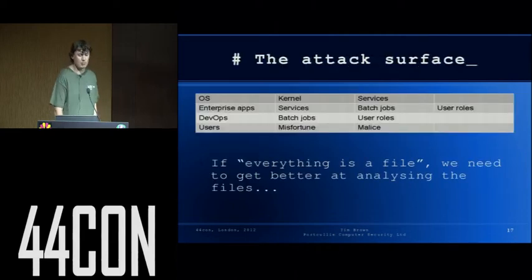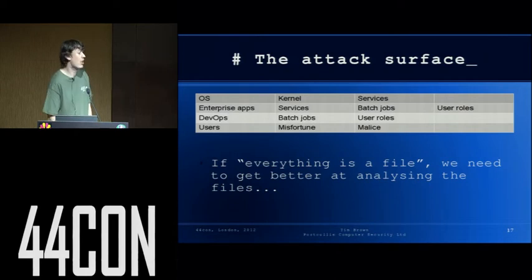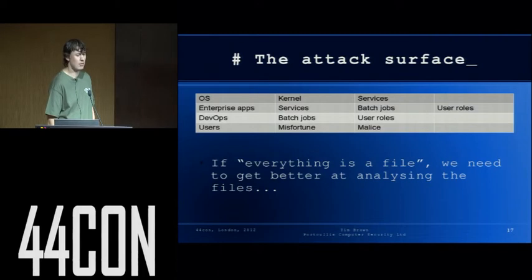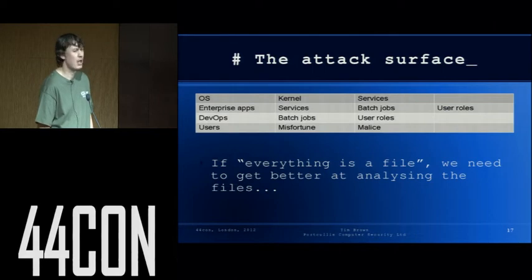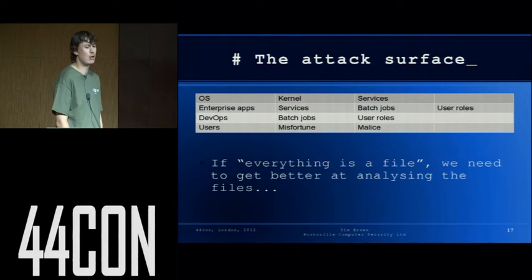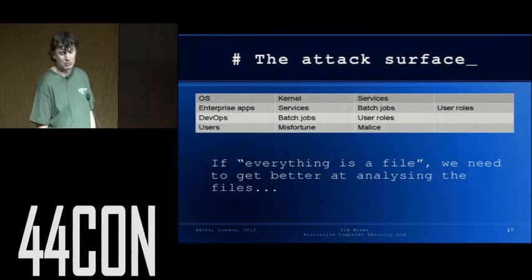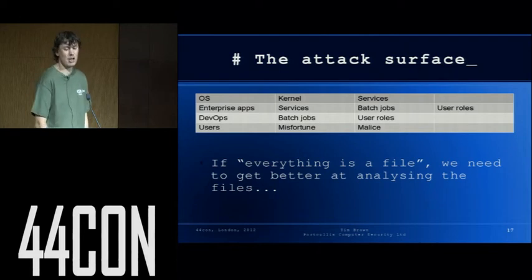So the attack surface. I've broken this down at a high level for the OS, enterprise apps, DevOps, and end user base, attempting to define what each brings in terms of areas of risk. For the OS, the kernel is first, then services and management stuff. Enterprise apps bring services and batch processes — cron or internal jobs. DevOps brings lots of batch jobs; they would replace us all with shell scripts if they could, and they bring the roles — those six different types of user. And then finally users, who just bring misfortune and malice.